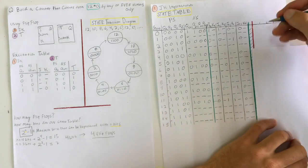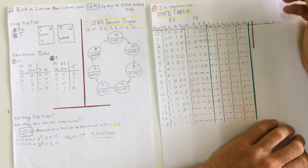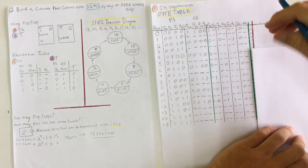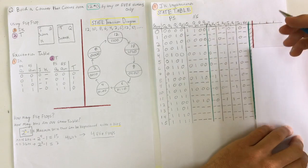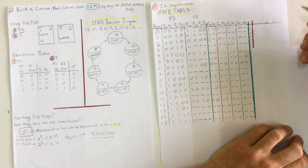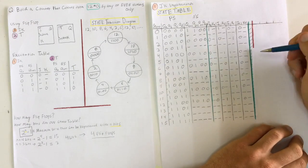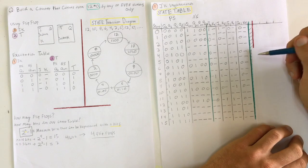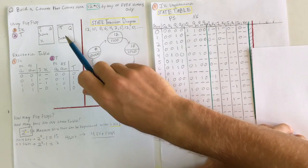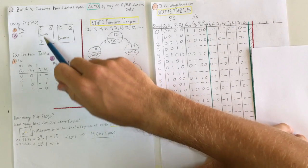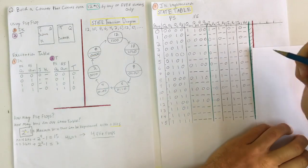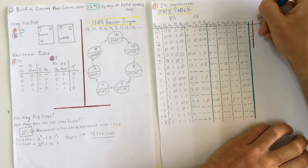Now we're going to build the table for T flip-flops as well, doing both implementations. We fill it in the same way as J and K, except now we only have one input per flip-flop. We use the excitation table in exactly the same way.